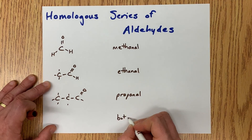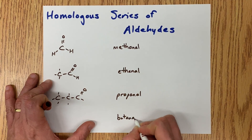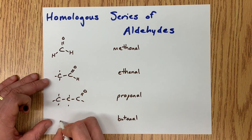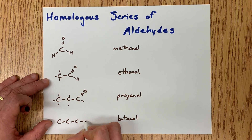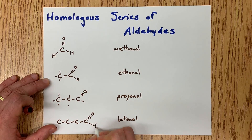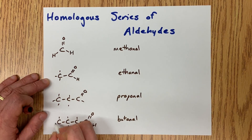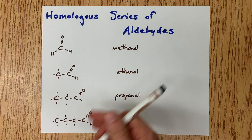A four carbon chain is 'bute', so the next member is butanal. And if you wanted to draw it, four carbons in a row with a double bonded O and a bunch of hydrogens to give each carbon four bonds.